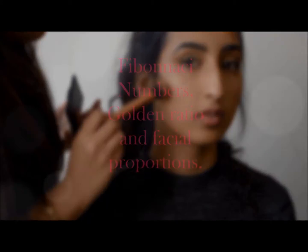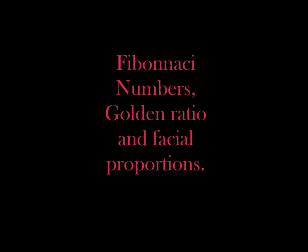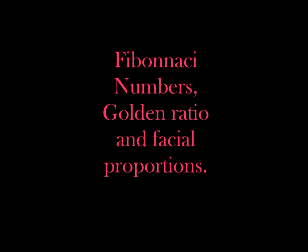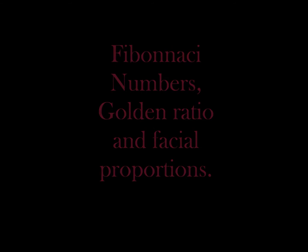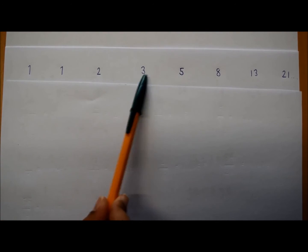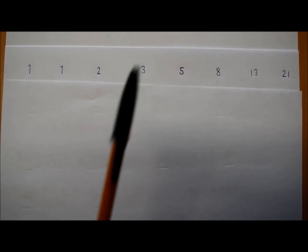So we've seen how trigonometry can be used to enhance our features using makeup. But how could Fibonacci numbers be related? The next number is the sum of the two previous numbers. So 1 plus 1 is 2, 1 plus 2 is 3, and 2 plus 3 is 5, and so on and so forth.